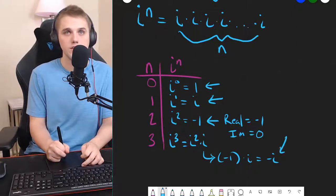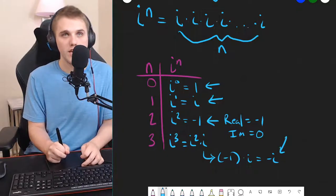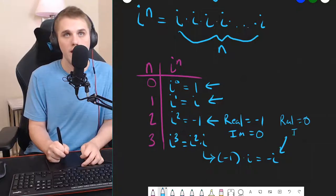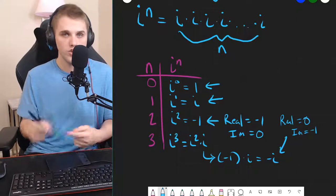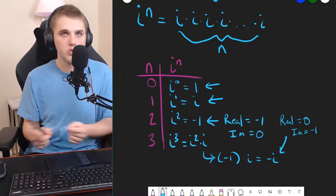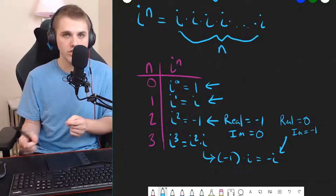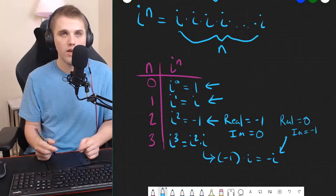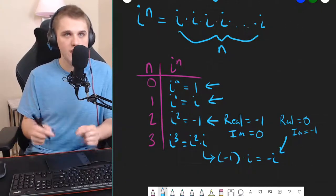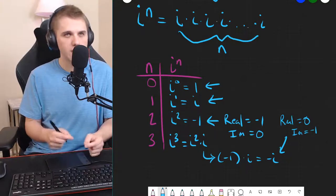And so, in this specific instance, the real part is 0, and the imaginary part is negative 1. So, you might notice we're rotating between real and imaginary, 0, 1, 0, 1. And on top of that, the signs are flipping. It went from positive to negative.